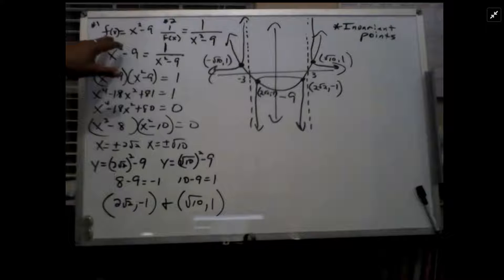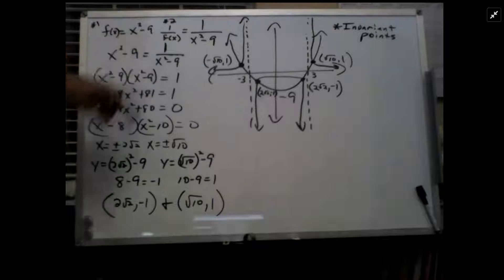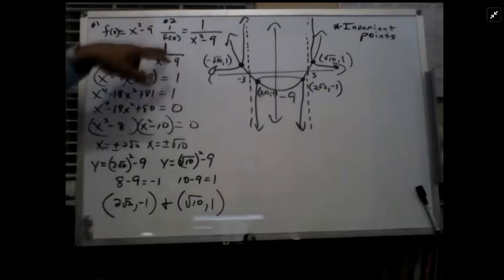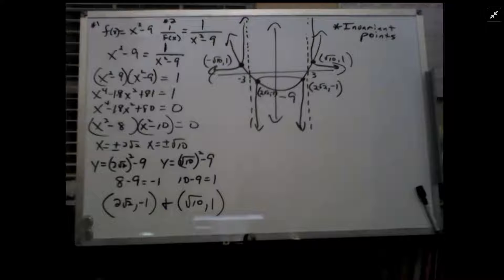In this case, the question we're given is f of x is x squared minus 9. So that makes the inverse function, the 1 over f of x, 1 over x squared minus 9.